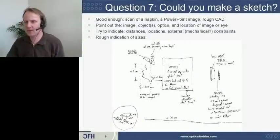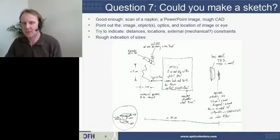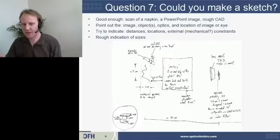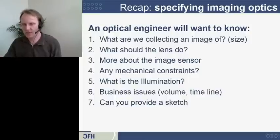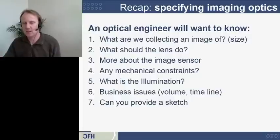The final question is to get a sketch. A sketch is important to reiterate the six questions already discussed, but also to make sure we're all on the same page about what is up, what is down, what is front, and the definition of everything. So the seven key things are: what are we collecting the image of and how big is it; the parameters of the lens such as zoom and magnification; the image sensor or human eye; any mechanical constraints; the lighting environment; business issues like timeline and production volume; and finally, a sketch of the system.